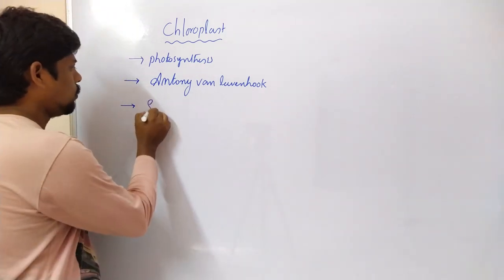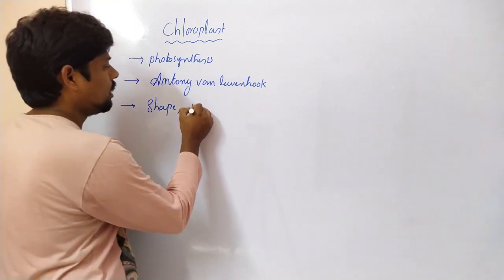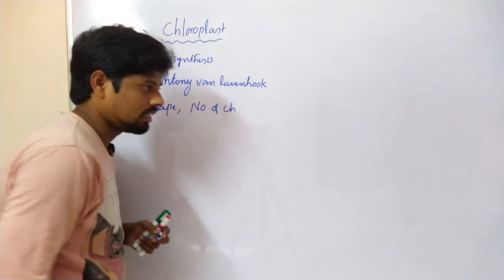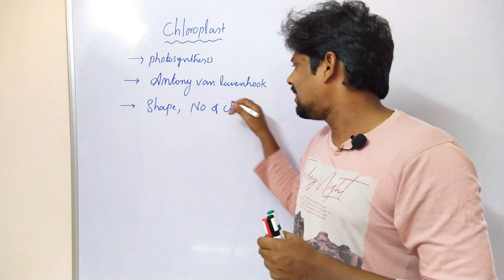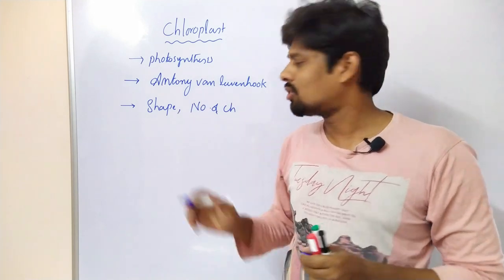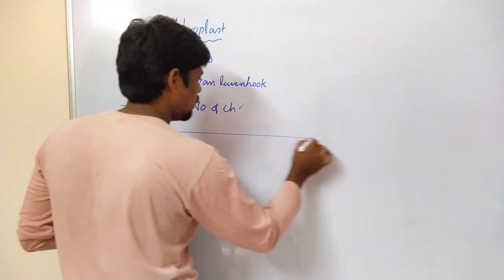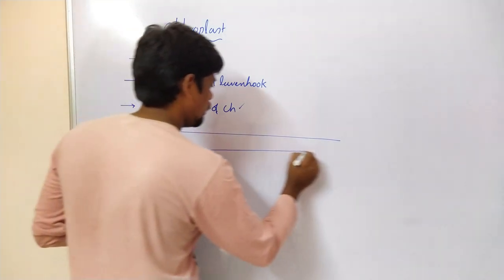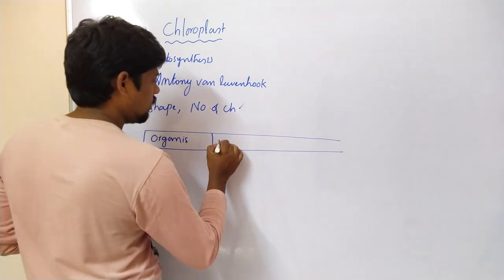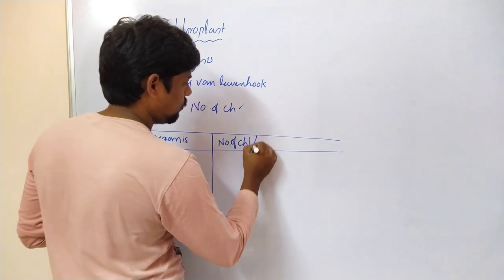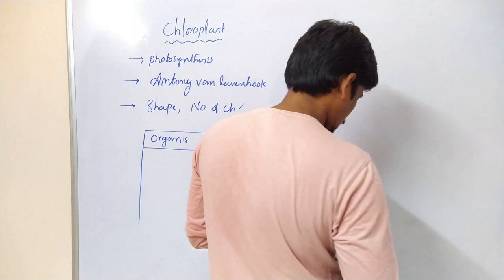Now, coming to the shape of chloroplast - is there only a single shape, or is there variation in the shapes of chloroplast? And what is the number of chloroplast in each cell? Is there only a constant number maintained across all organisms, or is there variation in the number of chloroplasts present in a cell? Let us look at a table showing organism and number of chloroplasts per cell.